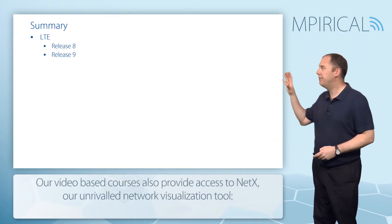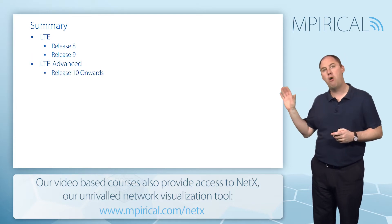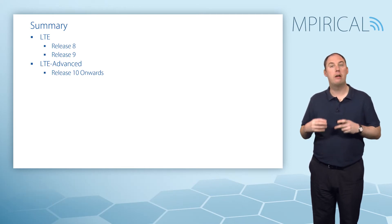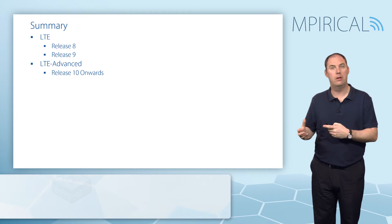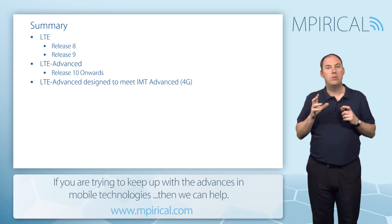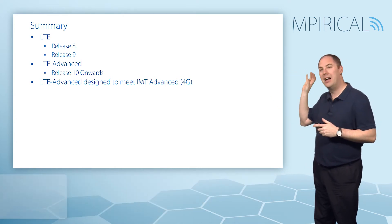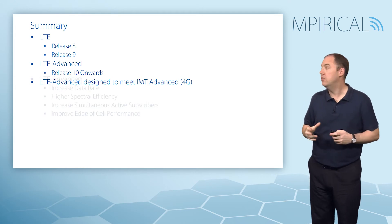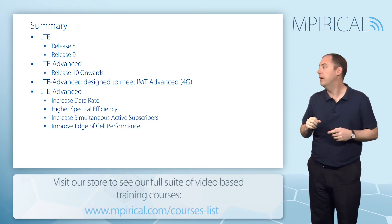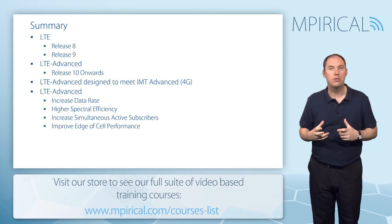In summary: LTE is release 8 and release 9; LTE Advanced is from release 10. It's worth remembering that UTRAN and GRAN have also been enhanced through releases 8, 9, 10, 11, 12, and so on. The concept of LTE Advanced was introduced to meet the requirements specified by the ITU for IMT Advanced, or 4G — improving data rates, spectral efficiency, the number of active subscribers, and edge-of-cell performance.